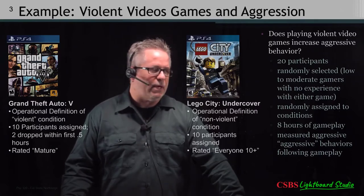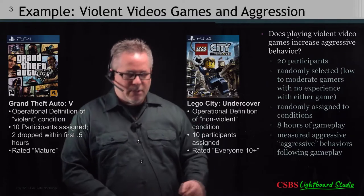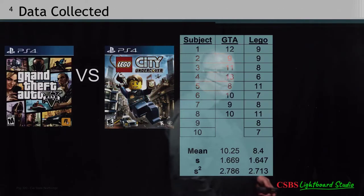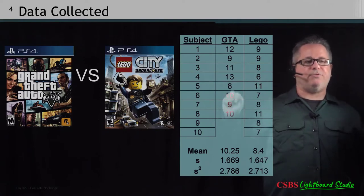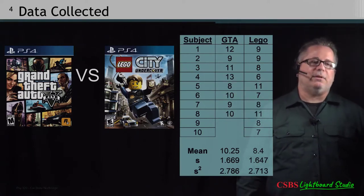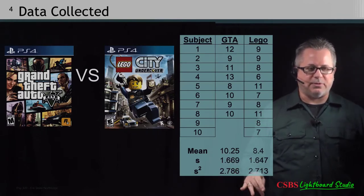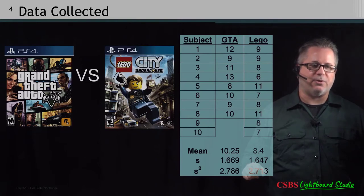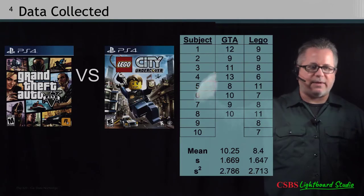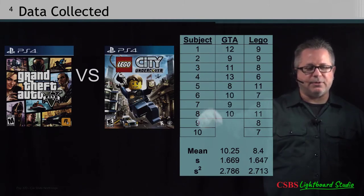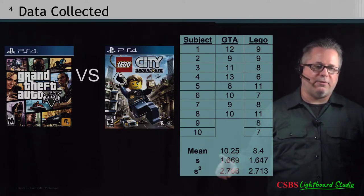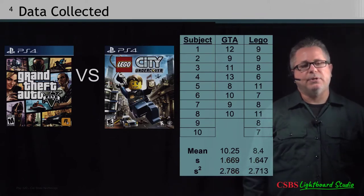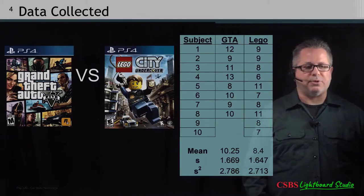We had participants play the game for eight hours and measured their aggression afterwards. Looking at the data, there is definitely at least a couple unit difference between the two groups, with the Grand Theft Auto group showing more aggression than the Lego group. Some participants, even in the Lego group, showed a decent amount of aggressive behaviors, but for the most part they were lower than the Grand Theft Auto group.